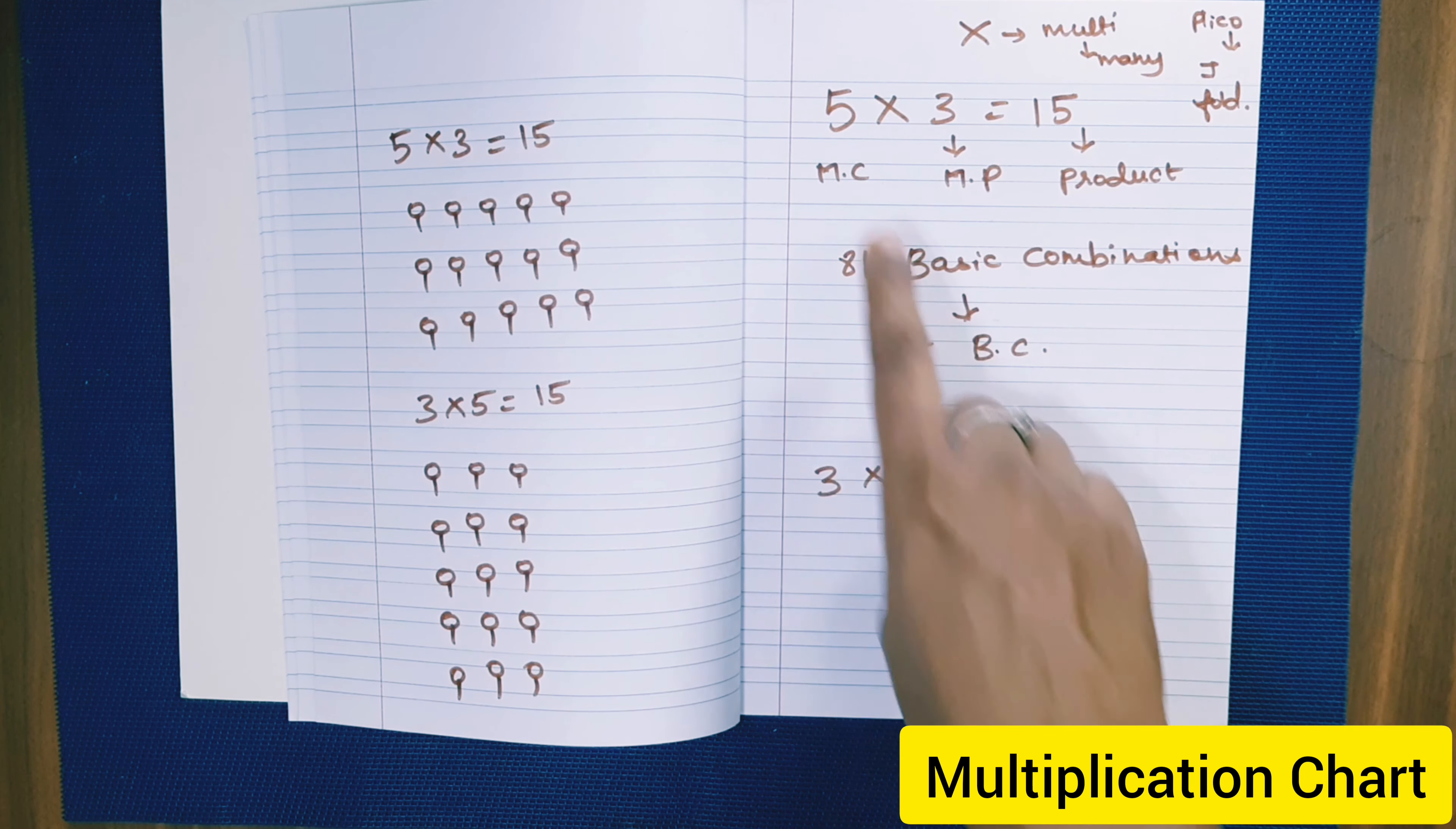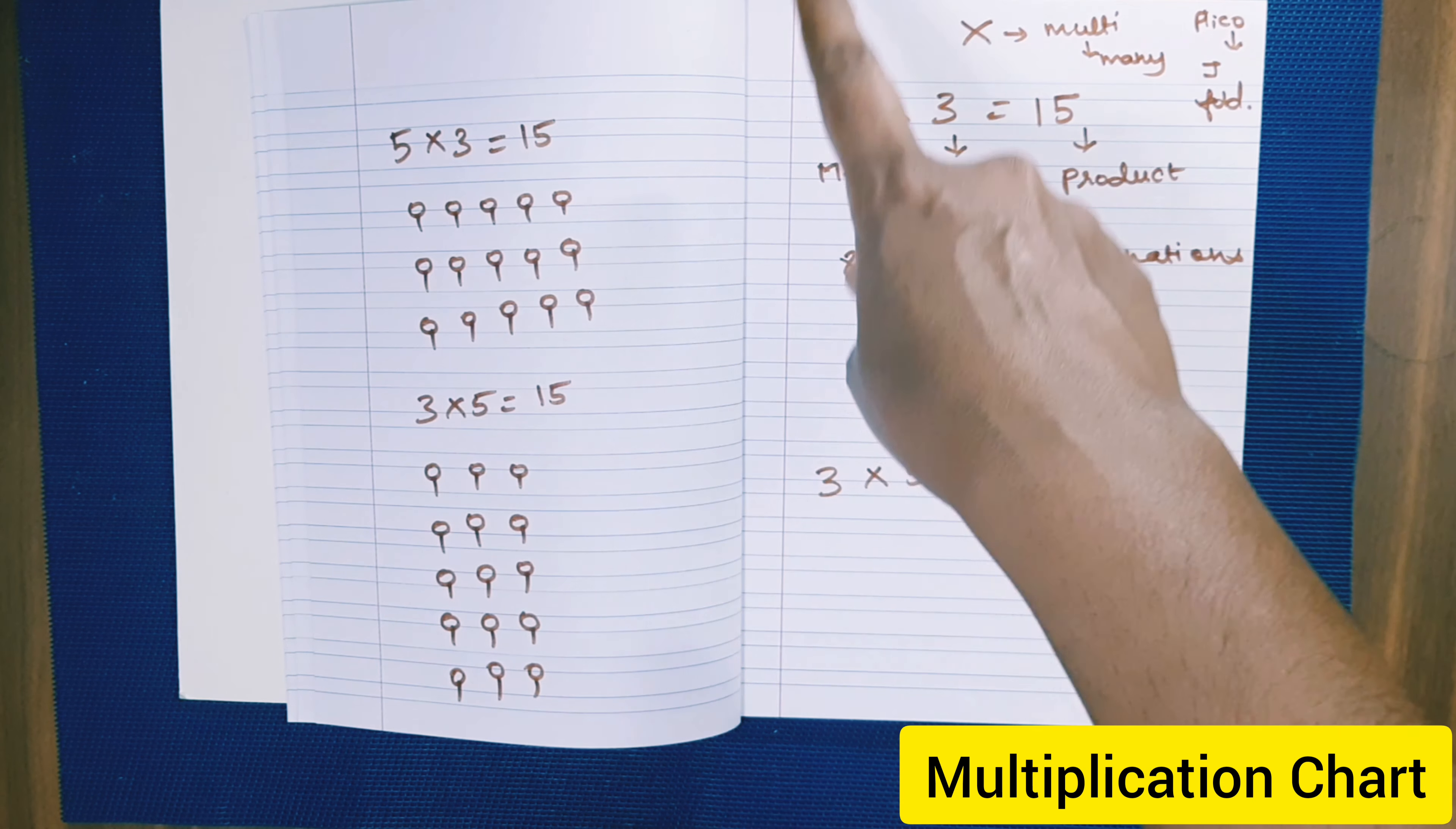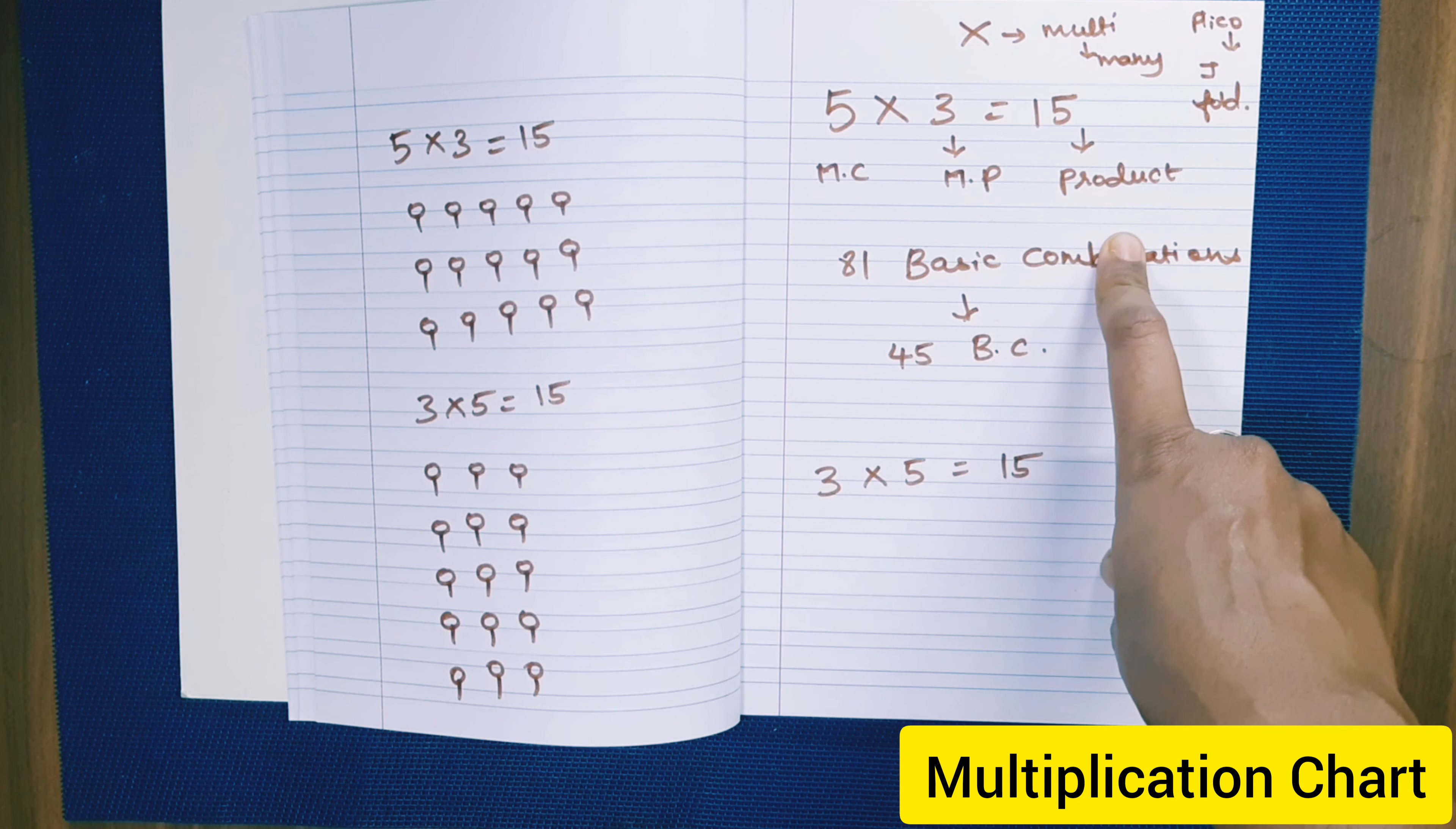So, 5 multiplied by 3 is equal to 15. Introduce to the child, this is multiplicand, this is multiplier and this is product. The importance of this is very important.